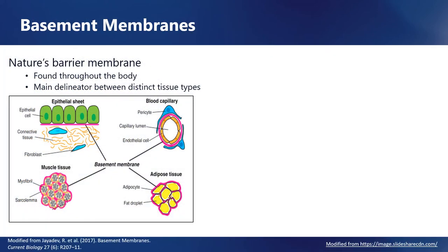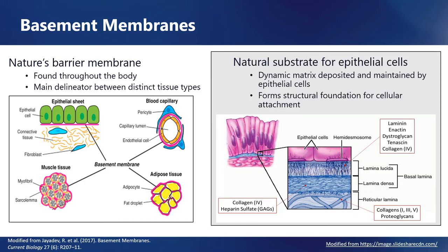An overlooked attribute of BioExclude, and amnion-chorion allograft membranes in general, is the presence of intact basement membranes. Basement membranes form natural tissue barriers and are found throughout the body, serving as the main delineators between distinct tissue types, including epithelial layers, blood capillaries, muscle fibers, and adipose tissue. Composed of a well-organized matrix rich in collagen IV and laminin, basement membranes are the natural substrate for epithelial cells. Importantly, the matrix components of basement membranes provide environmental cues to cells, effectively orienting them within complex tissues.